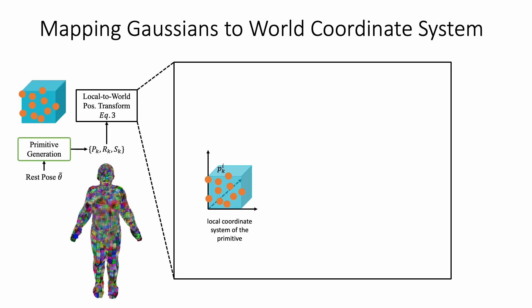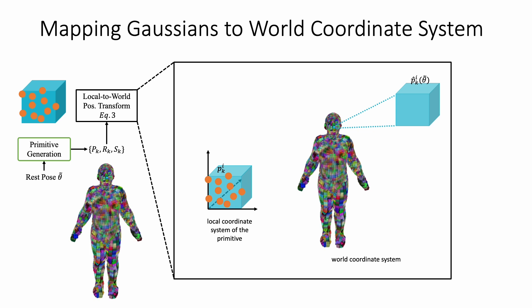Specifically, we first define 3D Gaussians in the local coordinate system of each primitive. We then map the Gaussian positions to the world coordinate system according to the position, scaling, and rotation of each primitive.